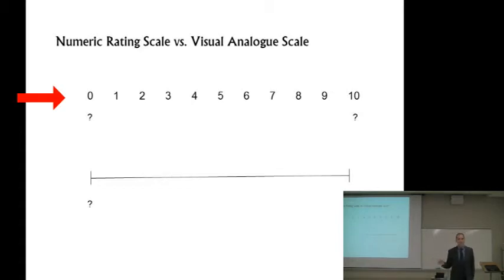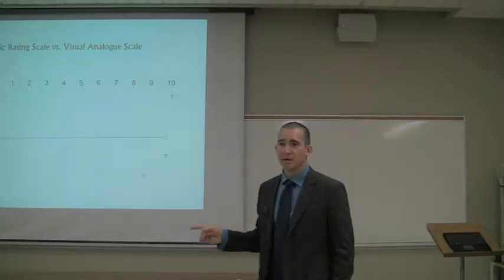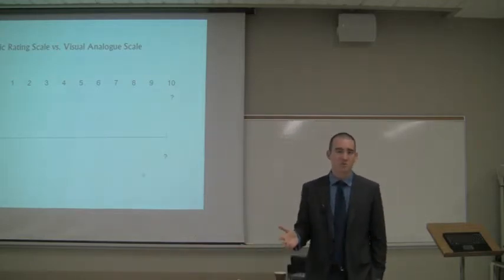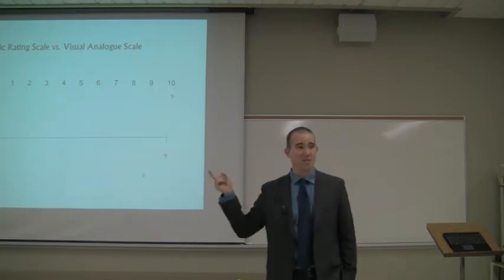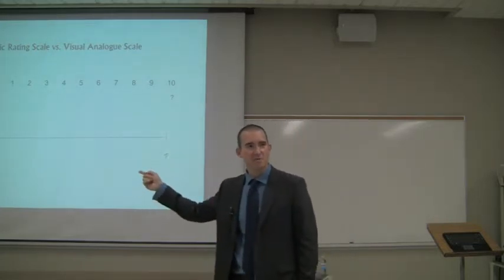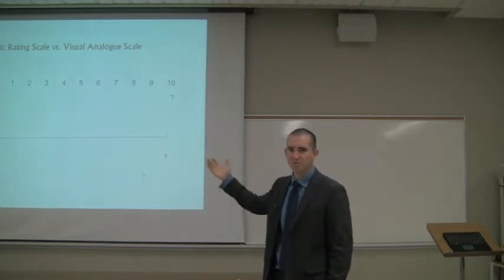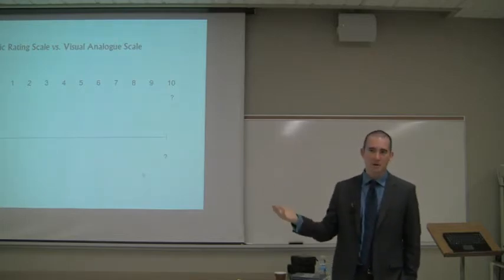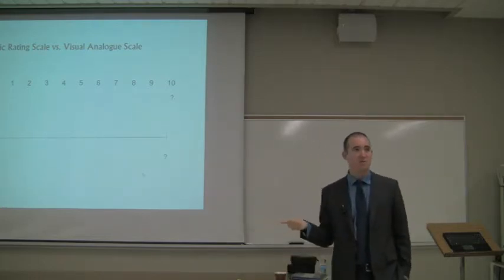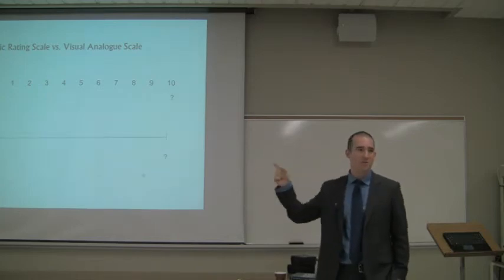The visual analog scale is probably used primarily in research, because it is as close to an inherently linear scale as you can get. For statistical purposes, some people argue that 0-10 really isn't linear — that the distance between 0 and 1 isn't the same as between 5 and 6. Whereas the difference between 1 centimeter and 2 centimeters is the same as between 5 and 6 centimeters. However, most research comparing these two scales has found that the numeric rating scale is superior for clinical purposes — there are fewer errors, it's less ambiguous, and it seems to work a little better.